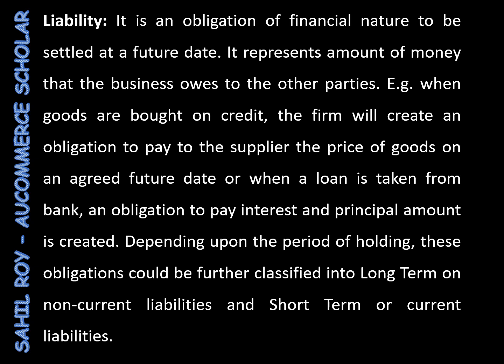Liability means it is an obligation of financial nature to be settled at a future date. It is an obligation of financial nature which is related to money and which you want to settle at a future date. It represents the amount of money that the business owes to other parties.